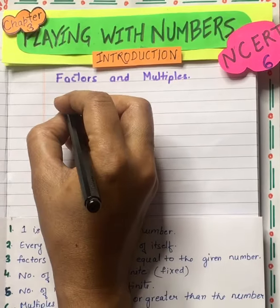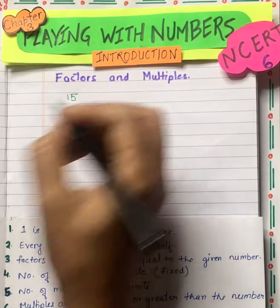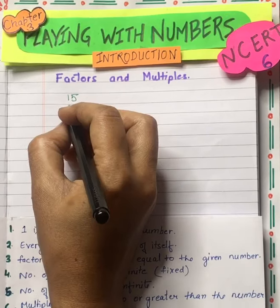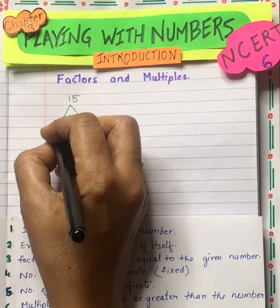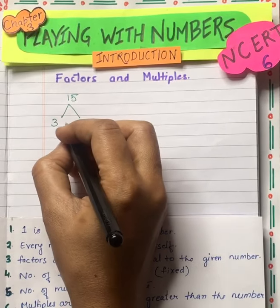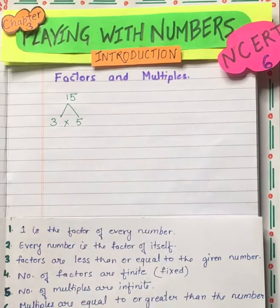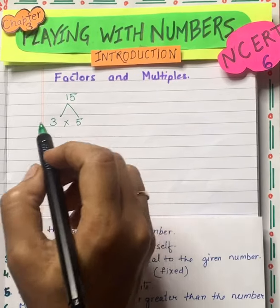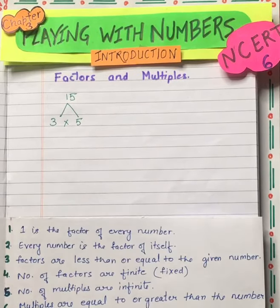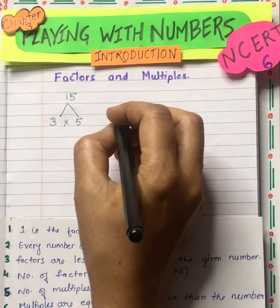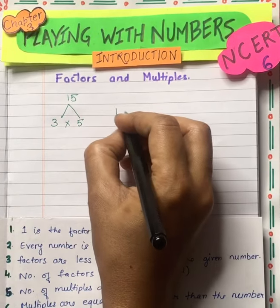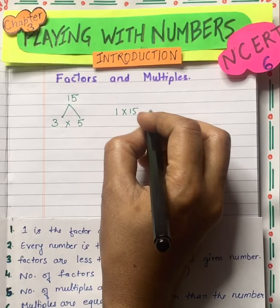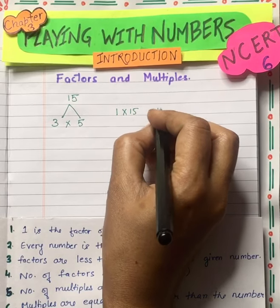Suppose that there is 15. Now we will see that 15 is in which table. So 15 — 3 into 5 is equal to 15. If I say 1, then 1 into 15 will be 15.